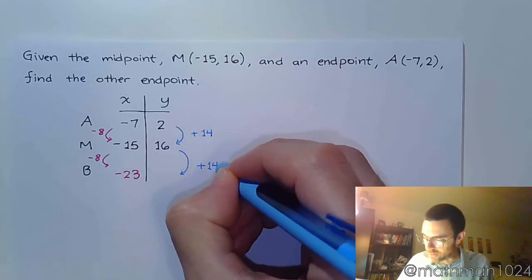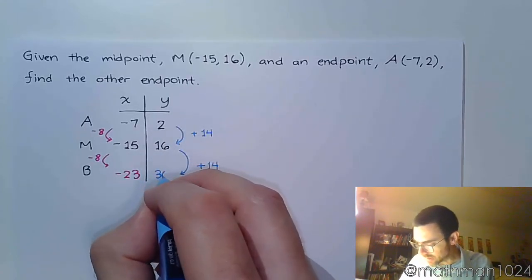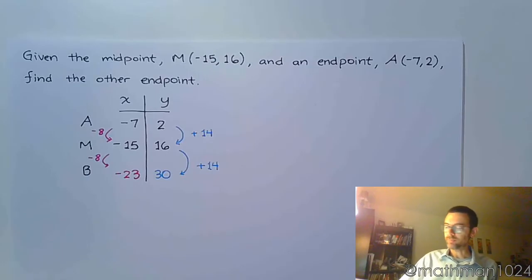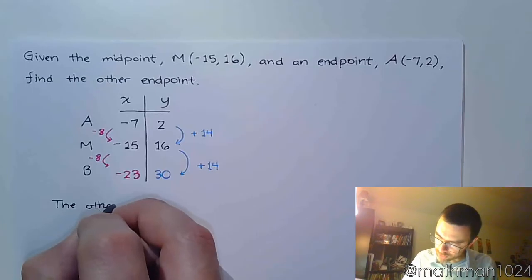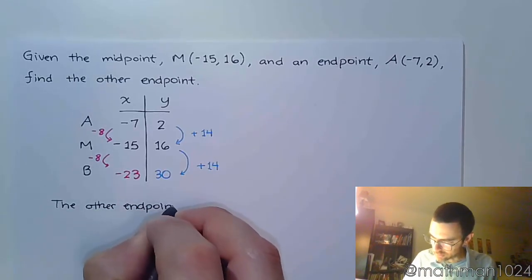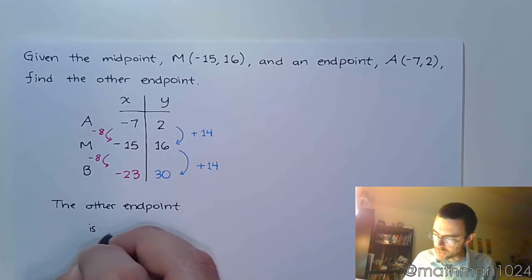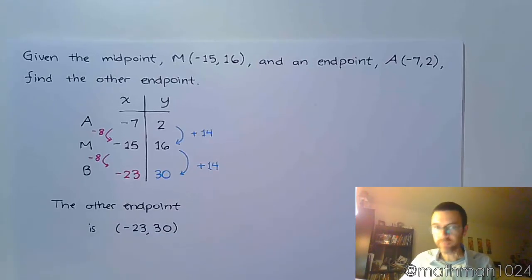And 16 plus 14 gives us 30. So we can say here that the other endpoint is the ordered pair negative 23 comma 30.